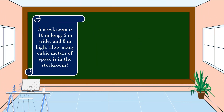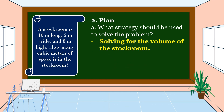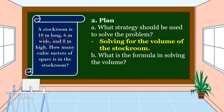After we understand the problem, the next step is we are going to make a plan. Under planning, we should consider this question: what strategy should be used to solve the problem? In this problem, we are going to solve for the volume of the stock room. The shape of the stock room is a rectangular prism — it is 10 meters long, 6 meters wide, and 8 meters high. The formula for the volume of a rectangular prism is: Volume is equal to length times width times height.